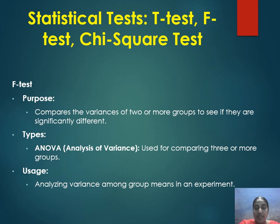ANOVA compares the variance of two or more groups to see if they are significantly different. ANOVA stands for Analysis of Variance and is used for comparing three or more groups. Its usage is to analyze the variance among group means in an experiment.